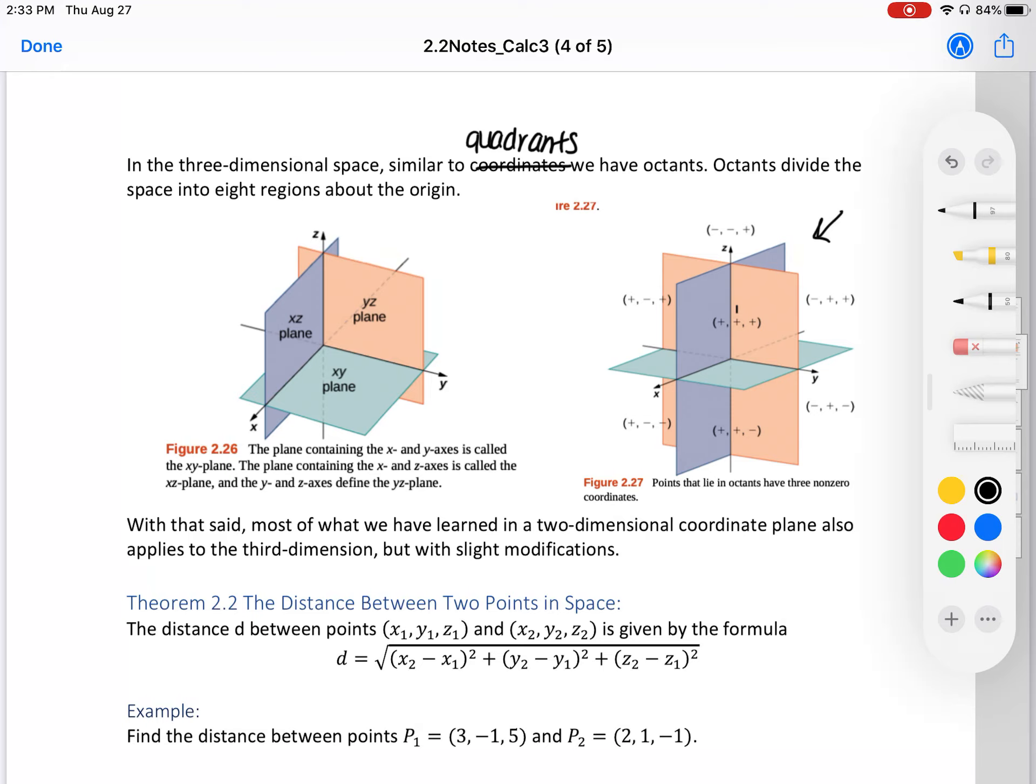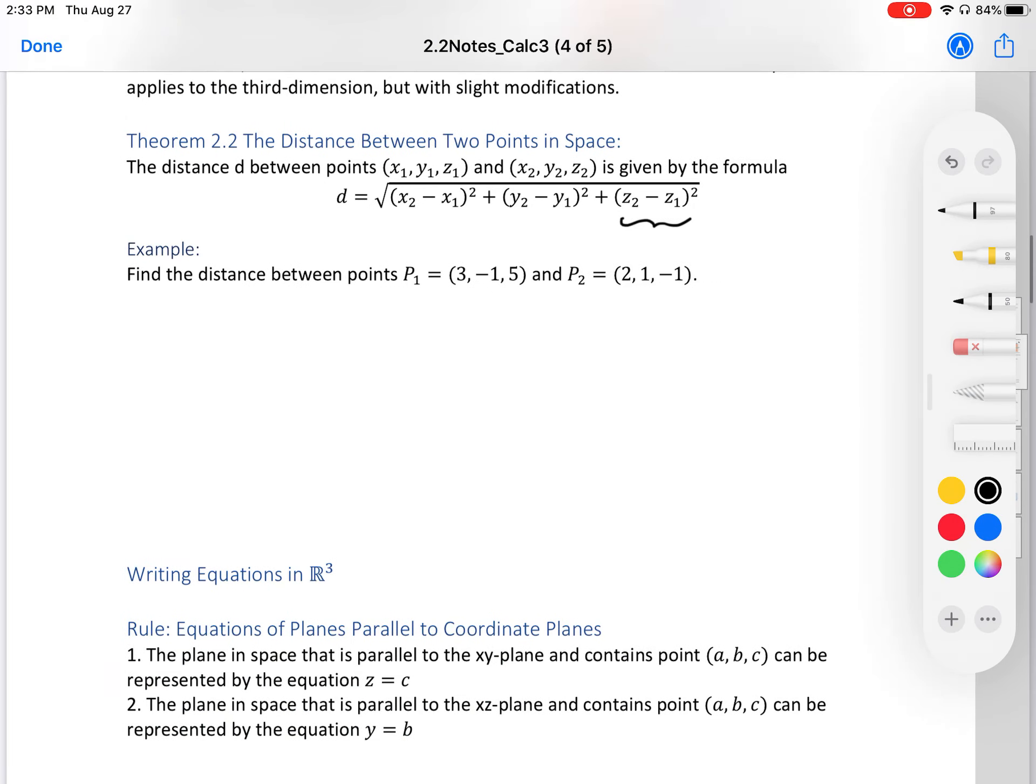With that said, most of what we have learned in two dimensional coordinate plane also applies to the third dimension but with slight modifications. Our next theorem 2.2 is the distance between two points in space. This should look super familiar to you. It is exactly like your distance formula of two points, but now we're adding that z. We're going to take the distance of two points from the z-coordinate.